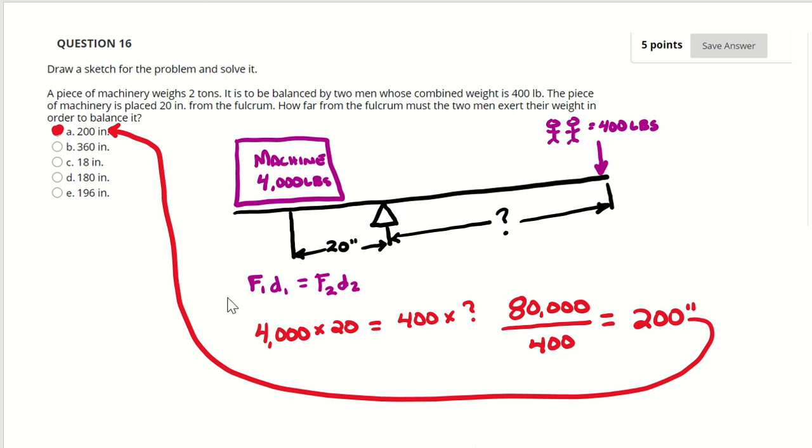So the formula is force one distance one equals force two times distance two. Here we have force one 4,000 pounds, distance one 20 inches. And over here we have force two 400 pounds and the unknown distance. So we do the math: 80,000 divided by 400 equals 200 inches. There's your answer there.